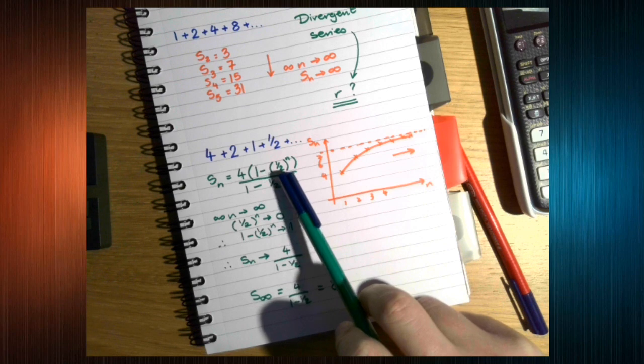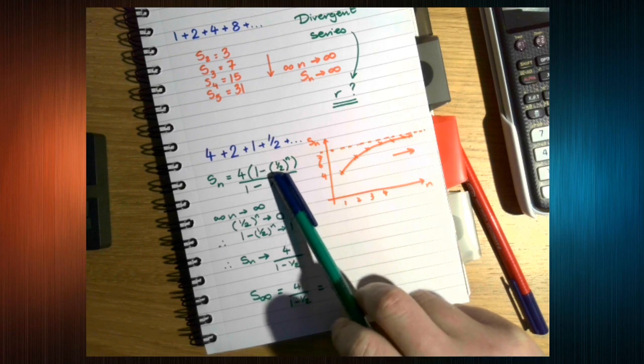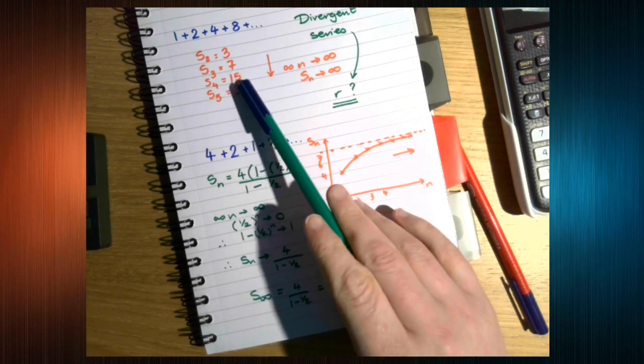In this case, it worked because r is a half. Here, it didn't because r was 2.